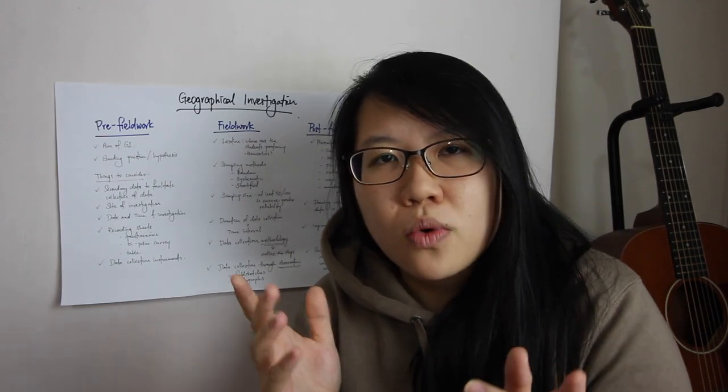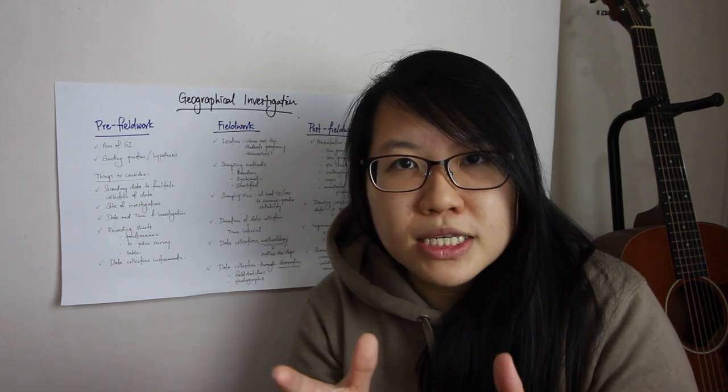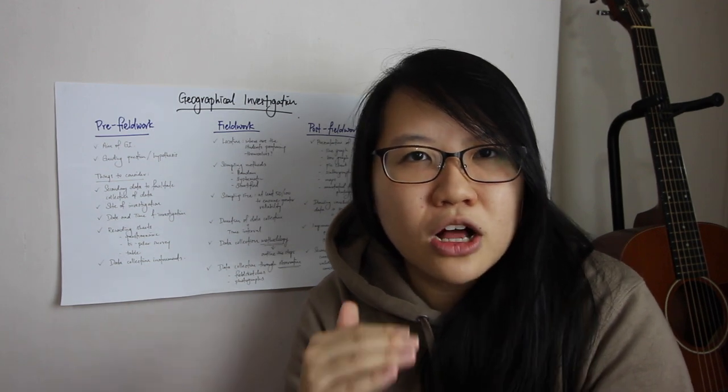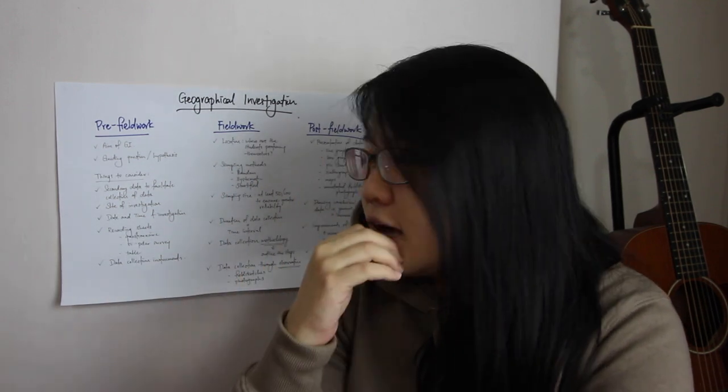The next things to consider are the suitability of the site, the date, and the time of investigation, which are dependent on context. Recording sheets for tourism GI can take the form of a questionnaire, bipolar survey, land use survey map, or a table for traffic count. If you get a question asking you to describe recording sheets, be very precise — for a table, tell me what each column and row represents and how you will input the data. For traffic count, the best method is the tally method where every stroke represents one individual.